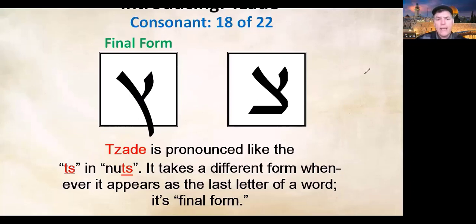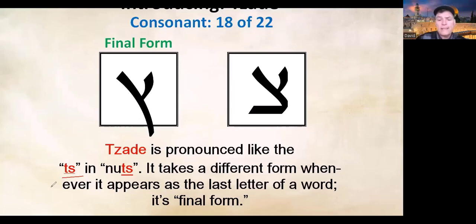Tsade is pronounced like the 'ts' in the word 'nuts.' In the English language we really don't have any letter in the English alphabet that would convey the sound 'ts' or 'tz' — that sound as in 'nuts.' This consonant, as I mentioned, does take a different form whenever it appears at the very end of a word.